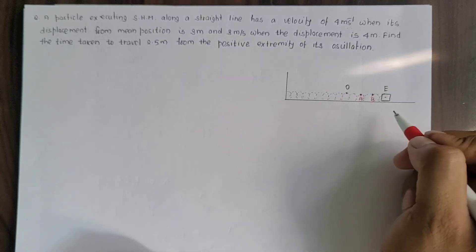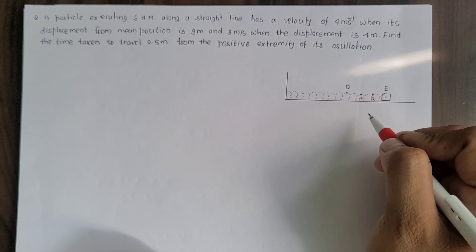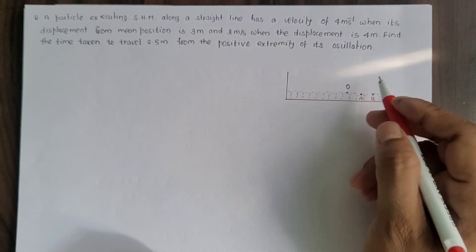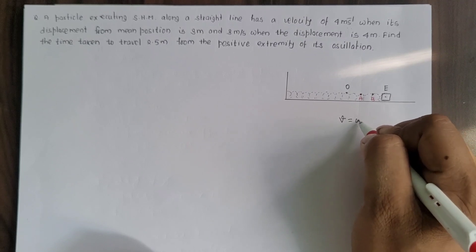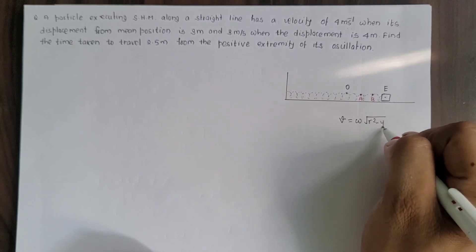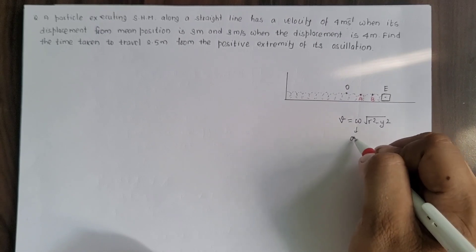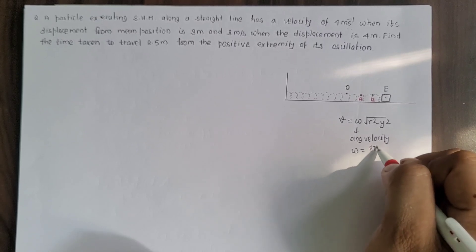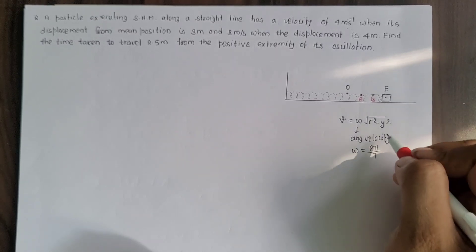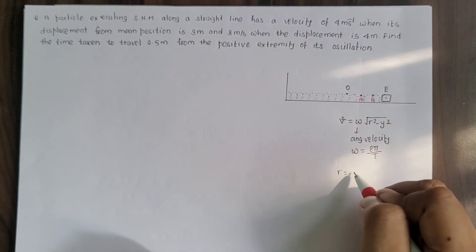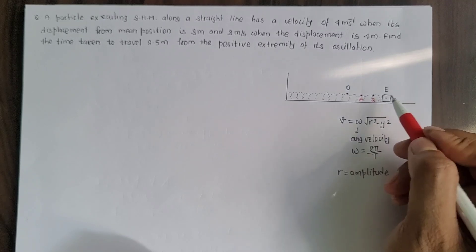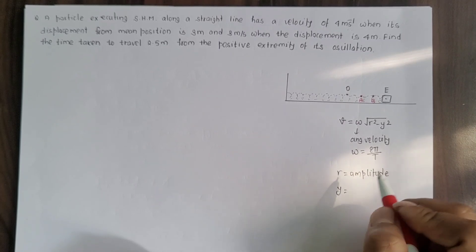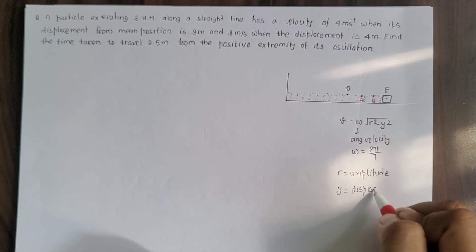We know that the velocity of the oscillating particle in SHM is not constant throughout the motion. The relation between linear velocity and displacement for a particle oscillating in SHM is: velocity v = ω√(r² - y²), where ω is the angular velocity given by ω = 2π/T, r is the amplitude (maximum displacement from mean position), and y is the instantaneous displacement from the mean position.